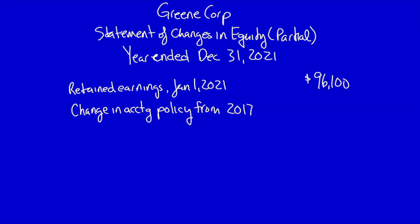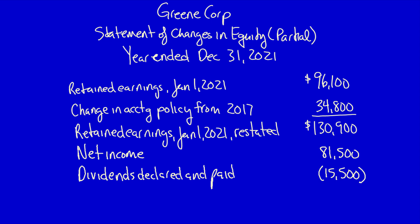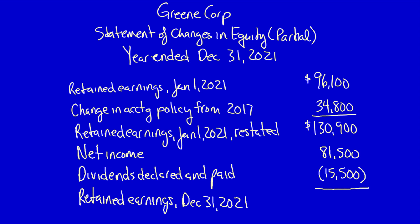Adding $34,800 to the statement: restated retained earnings at January 1st, 2021 is $130,900. We then continue the retained earnings column as normal. Add net income of $81,500 — already calculated using the new straight-line method, so no adjustment needed. Deduct dividends declared and paid in 2021 of $15,500. Retained earnings at December 31st, 2021 is therefore $196,900. This updated amount flows to the equity section of the Statement of Financial Position (balance sheet) under retained earnings.